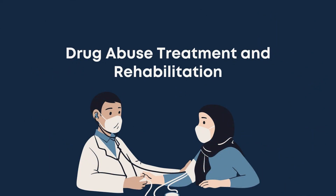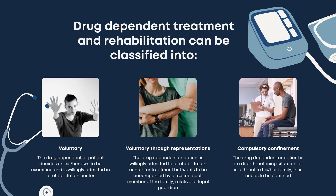Drug treatment and rehabilitation can be classified into the following. First is voluntary, which means that the drug dependent or patient decides on his or her own to be examined and is willingly admitted in a rehabilitation center. The second is voluntary through representations, where the patient is willingly admitted to a rehabilitation center but wants to be accompanied by a trusted adult member of the family, relative, or legal guardian. And lastly, compulsory confinement, where the drug dependent is in a life-threatening situation or is a threat to his or her family, and thus needs to be confined.